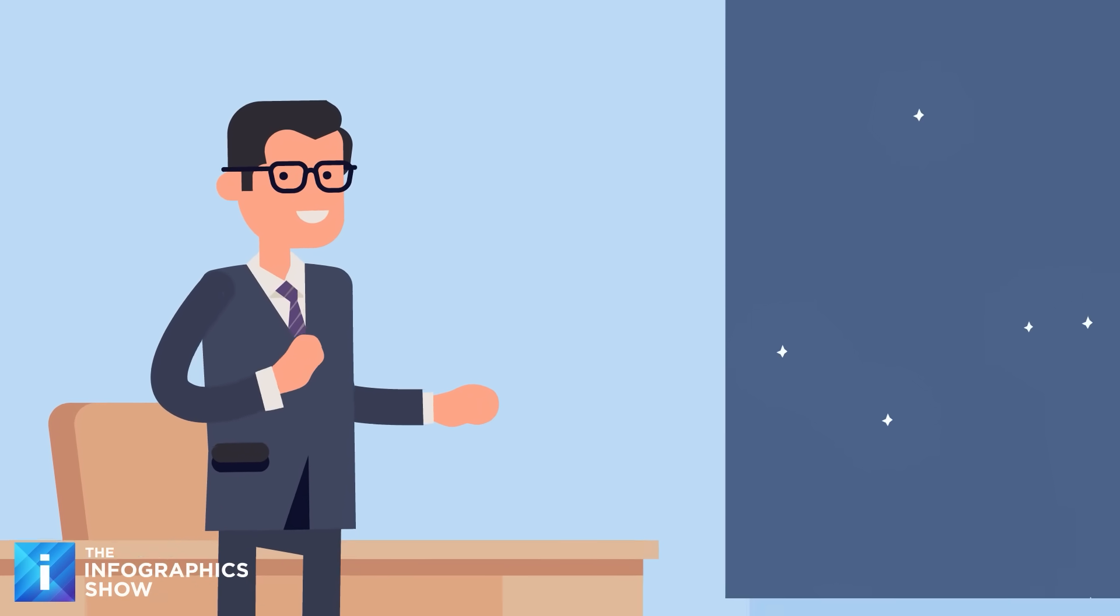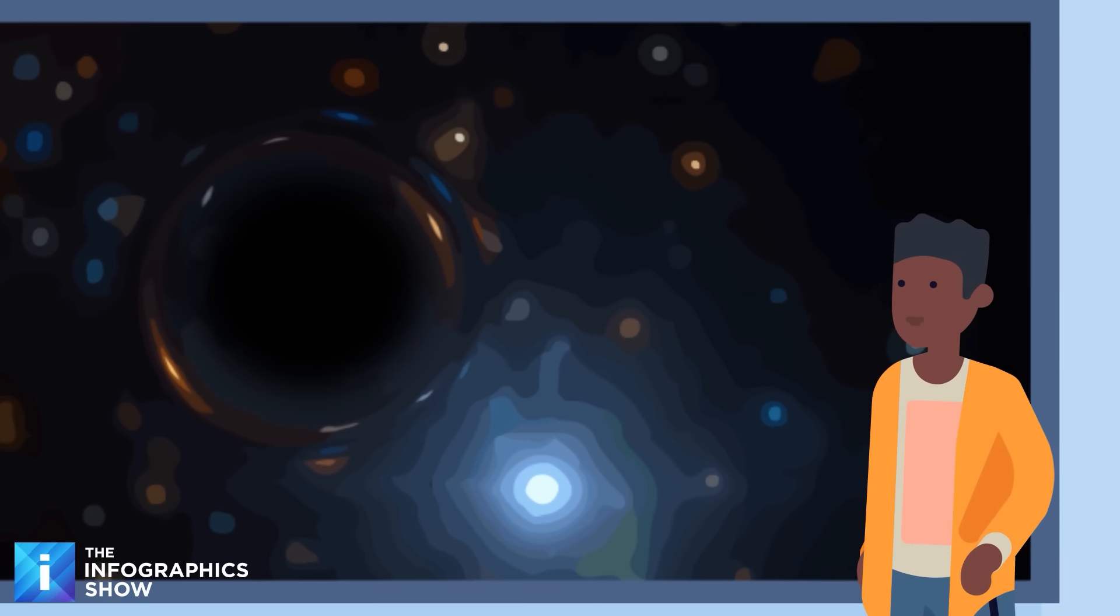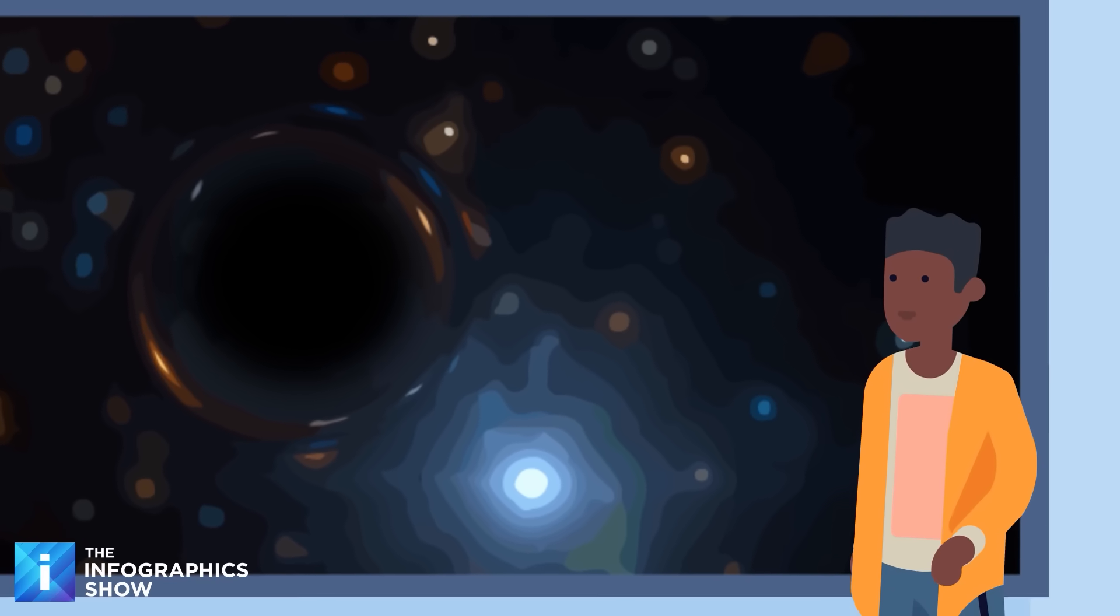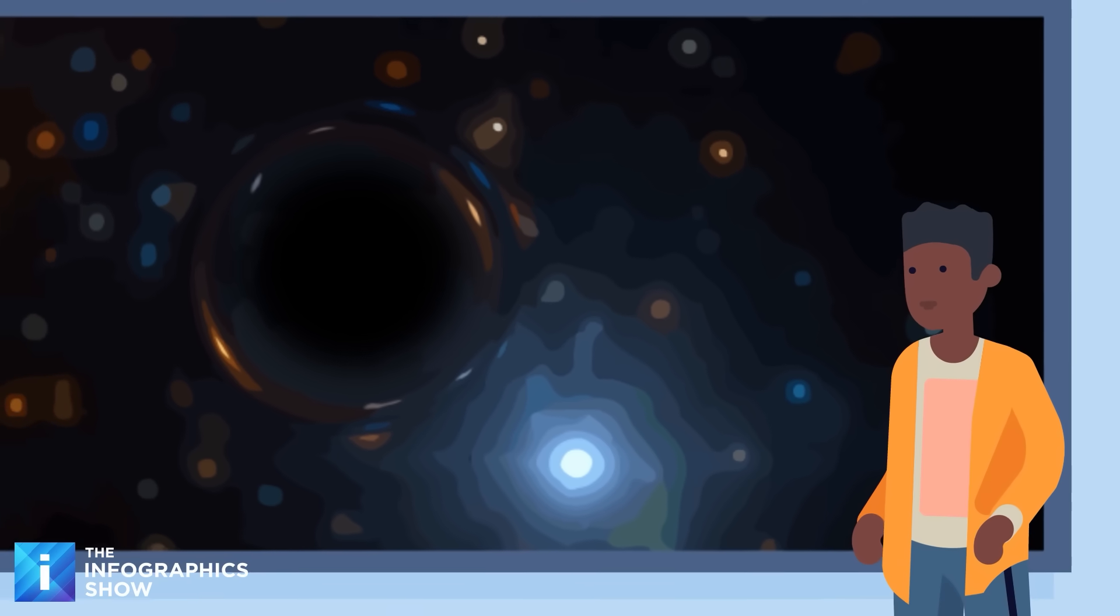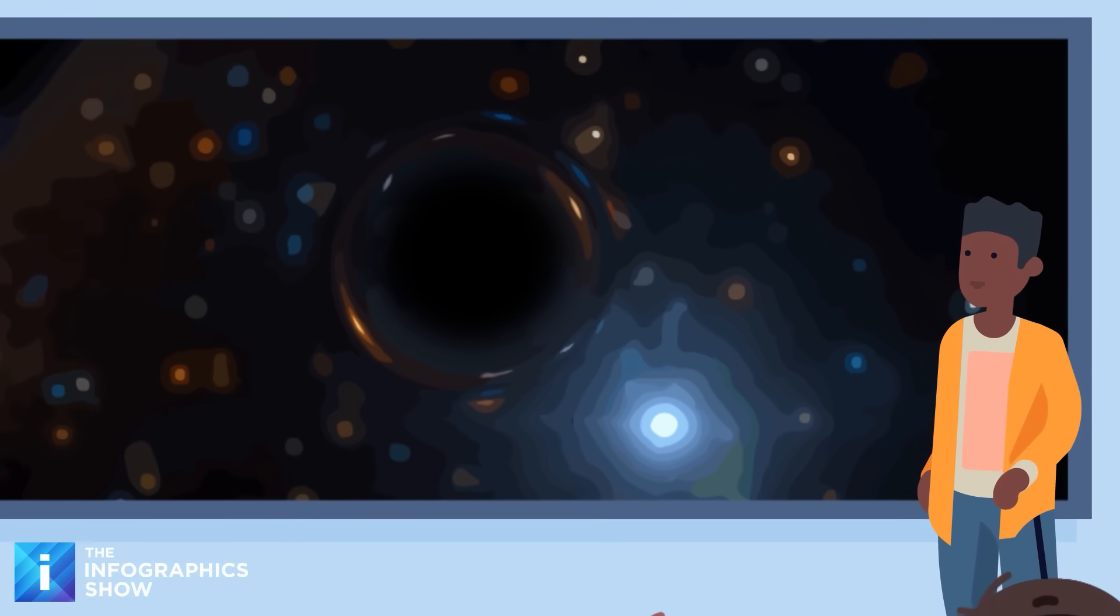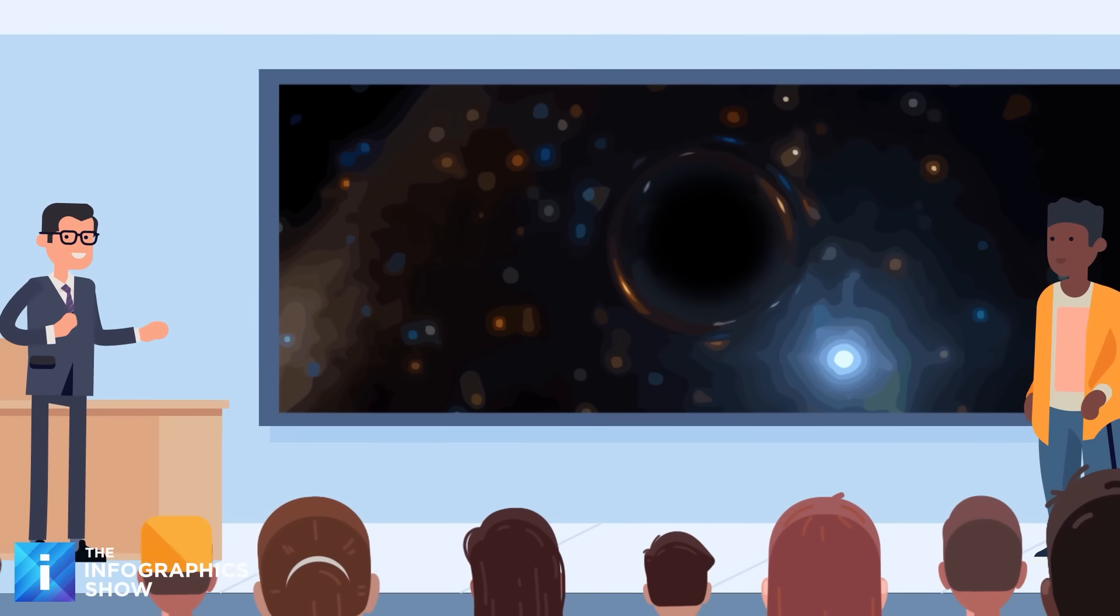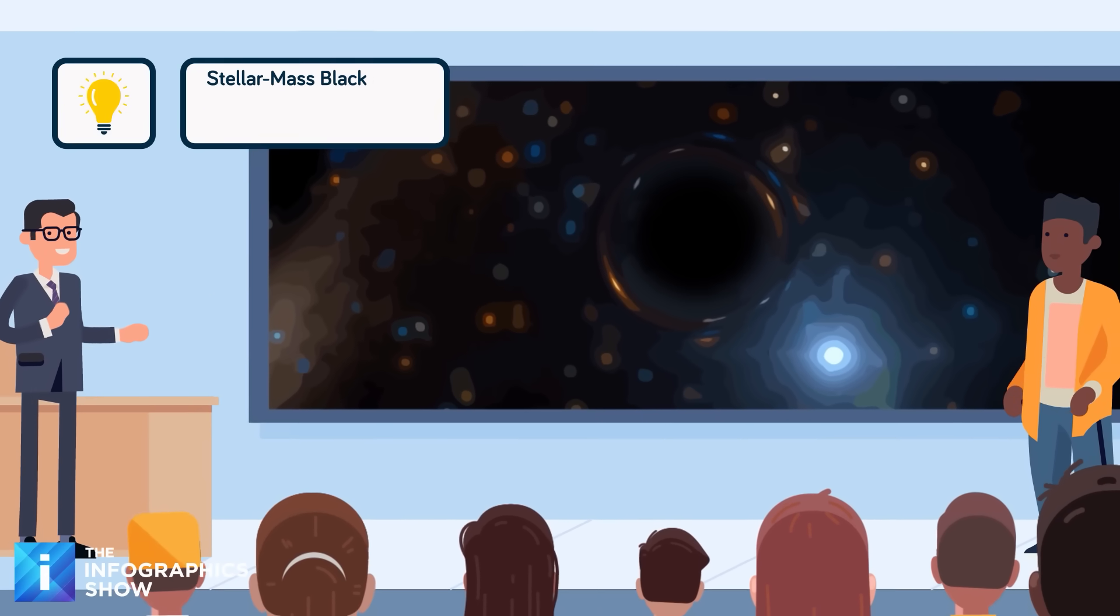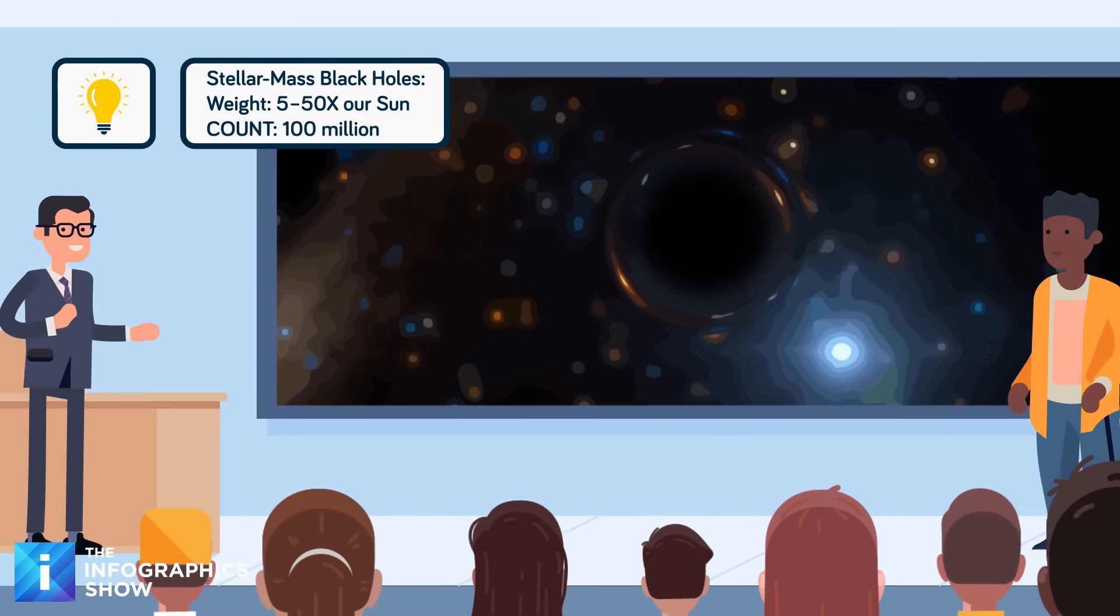Black holes basically come in three versions, each one more terrifying than the last. Stellar mass black holes are your run-of-the-mill void destroyers. They are the most common type, but that doesn't make them any less terrifying. Born from the violent death of massive stars, they typically weigh in at 5 to 50 times the mass of our sun. They are like soul-sucking landmines scattered throughout every galaxy. Our Milky Way alone contains an estimated 100 million of these invisible killers drifting silently through space.